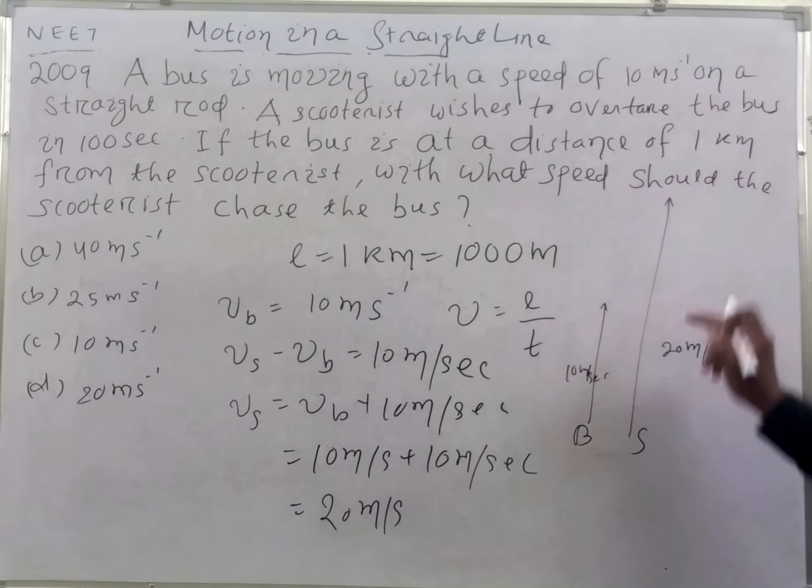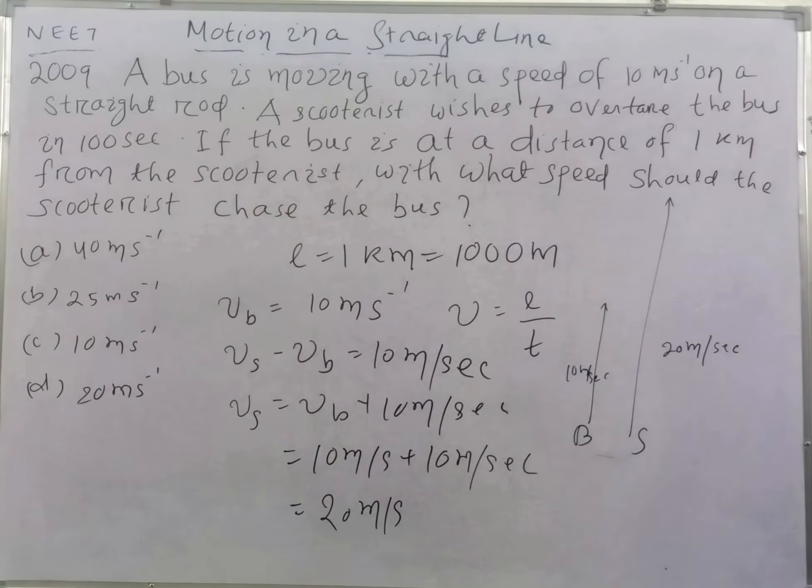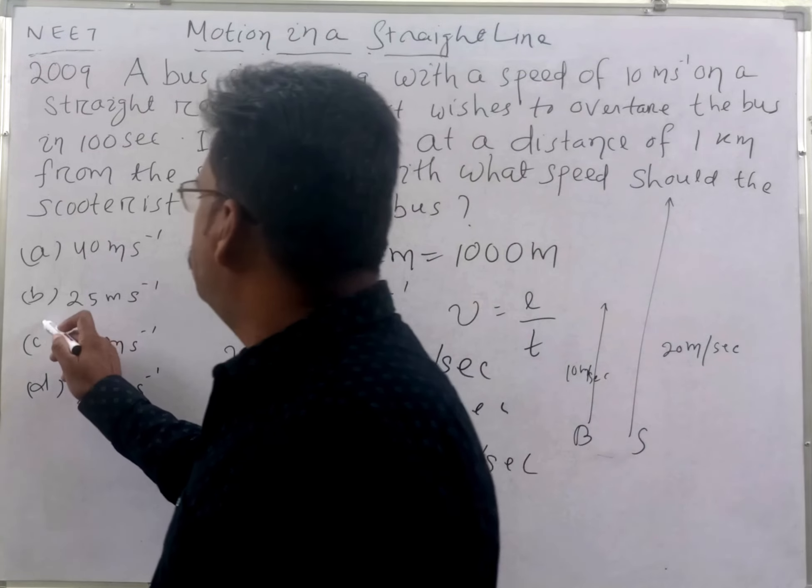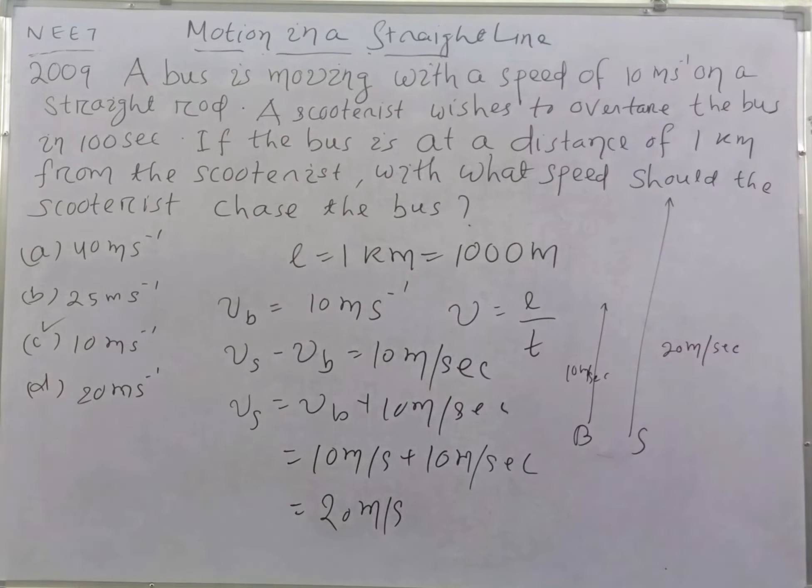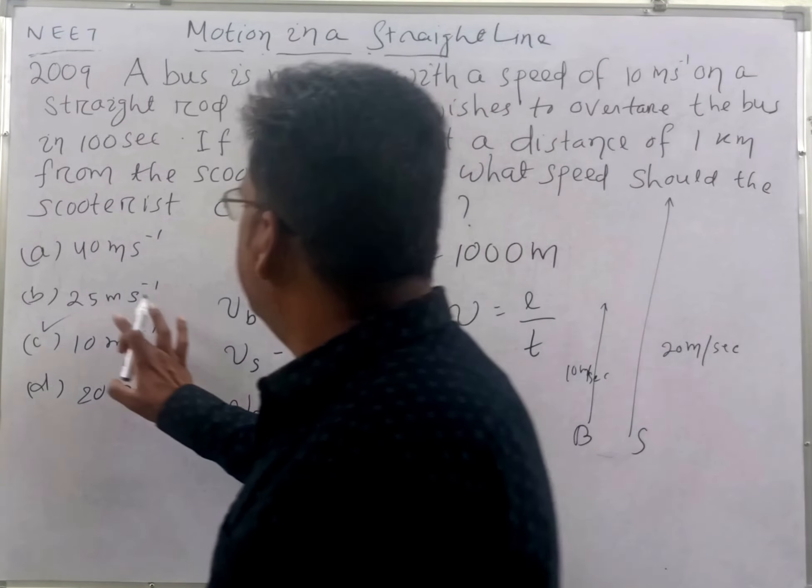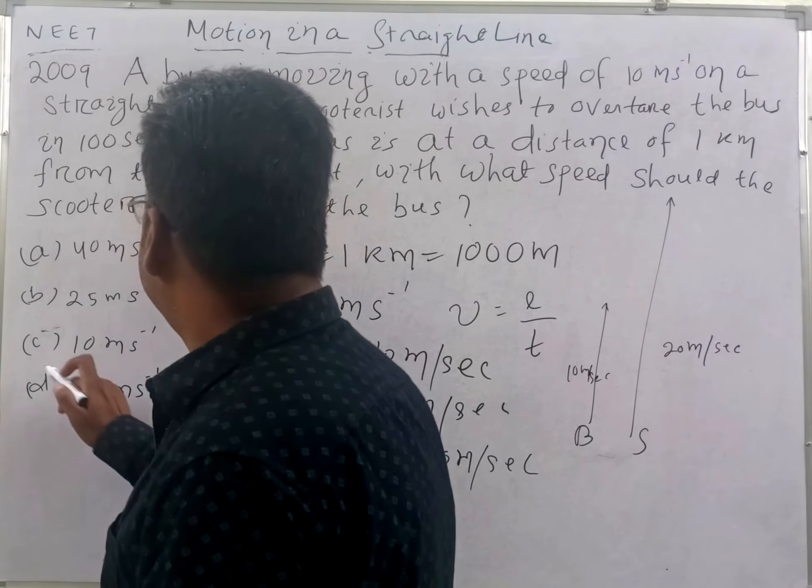In 100 seconds at 10 meters per second relative velocity, we cover 10 times 100, which equals 1000 meters. So the answer is option D, 20 meters per second.